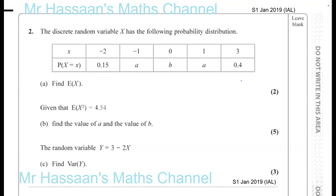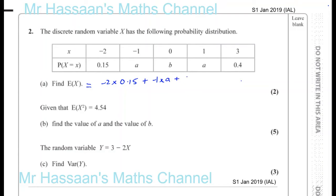It will work out because B is going to be multiplied by 0, which is going to disappear, and the A's are both multiplied — this A is multiplied by minus 1 and this by plus 1, so they will cancel out anyway. So for the expected value of X: you have minus 2 times 0.15, then plus minus 1 times A, plus 0 times B, plus 1 times A, plus 3 times 0.4.